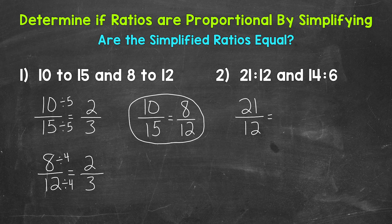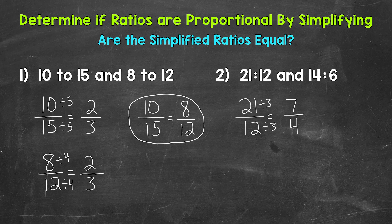The greatest common factor between 21 and 12 is 3, so let's divide both of these terms by 3. 21 divided by 3 is 7, and 12 divided by 3 is 4. The greatest common factor between 7 and 4 is 1, so we are in simplest form. 21 to 12 simplifies to 7 to 4.